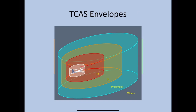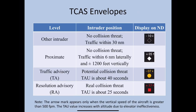Based on tau — the time to impact — TCAS defines four envelopes: Other, Proximate, TA, and RA. Let's have a look at the table. The 'Other' intruder is no collision threat but traffic is within 30 nautical miles, indicated by a white hollow diamond. Proximate traffic is also no collision threat but is within approximately 6 nautical miles laterally and 1200 feet vertically — plus or minus above and below — indicated by a solid white diamond.